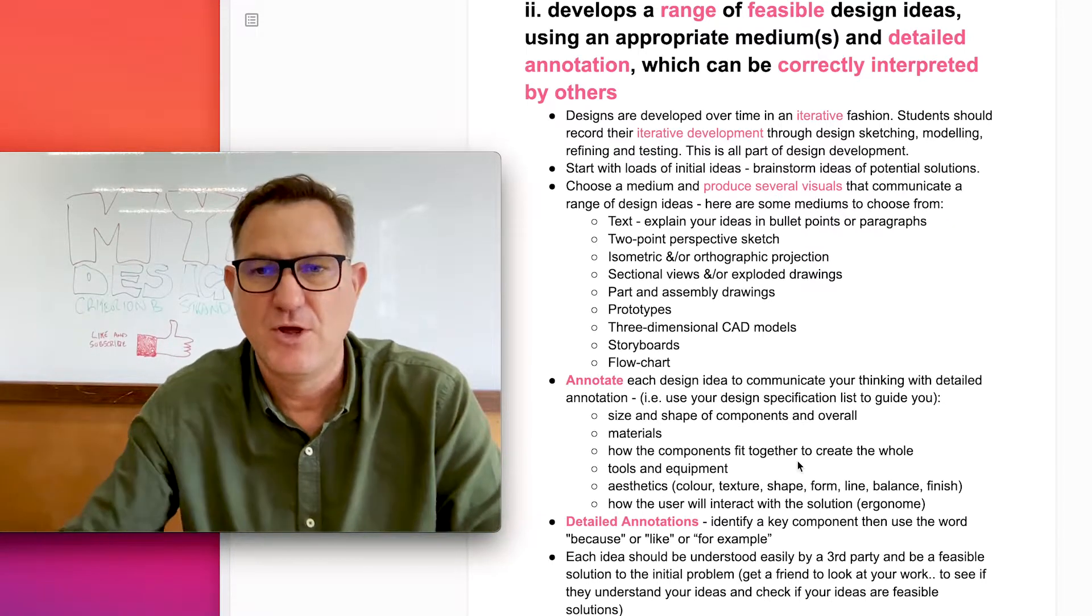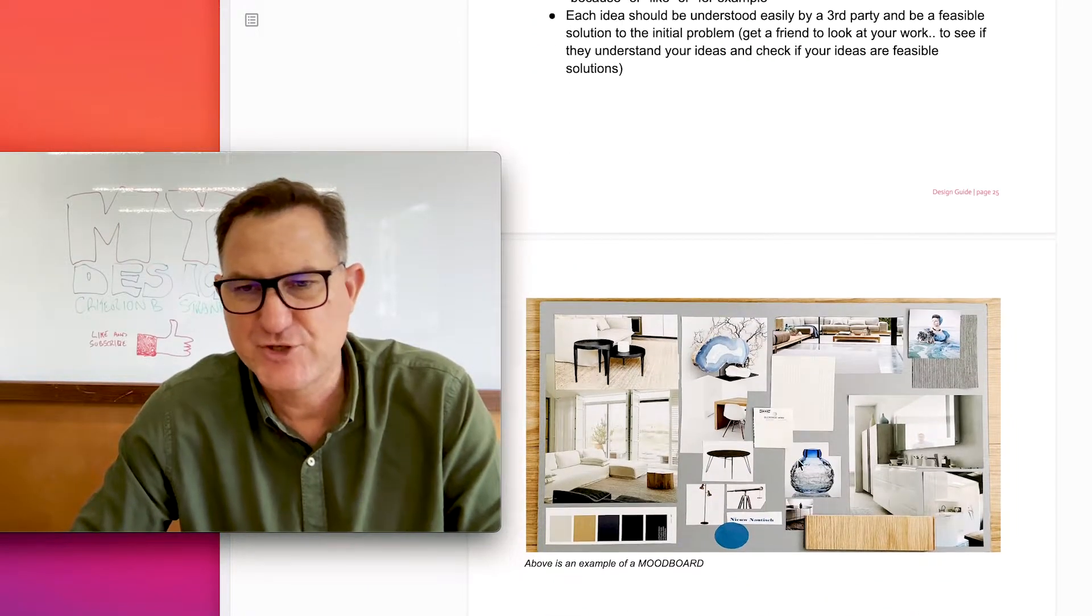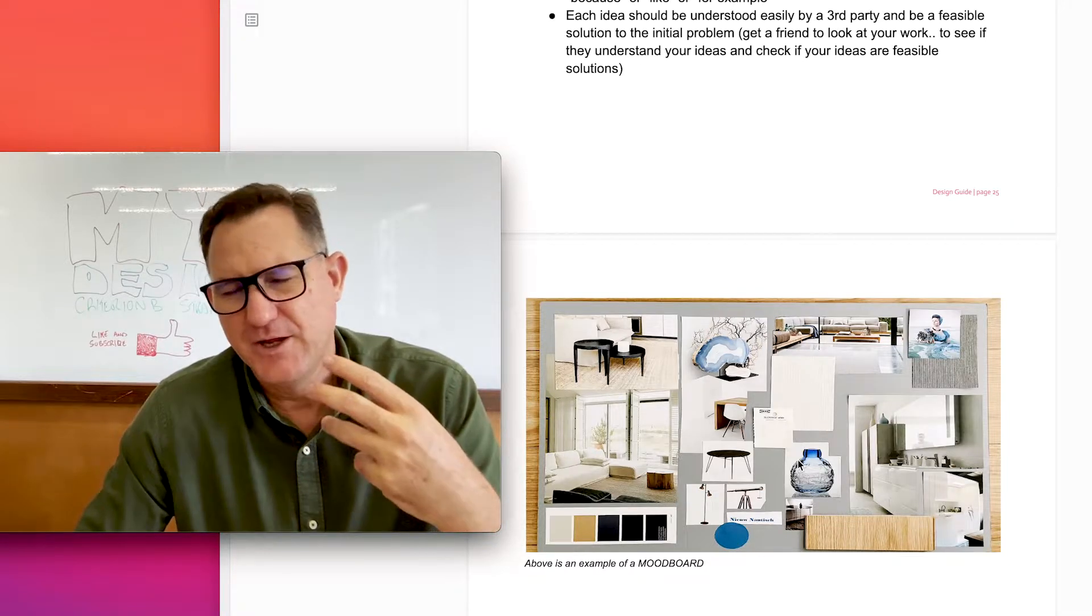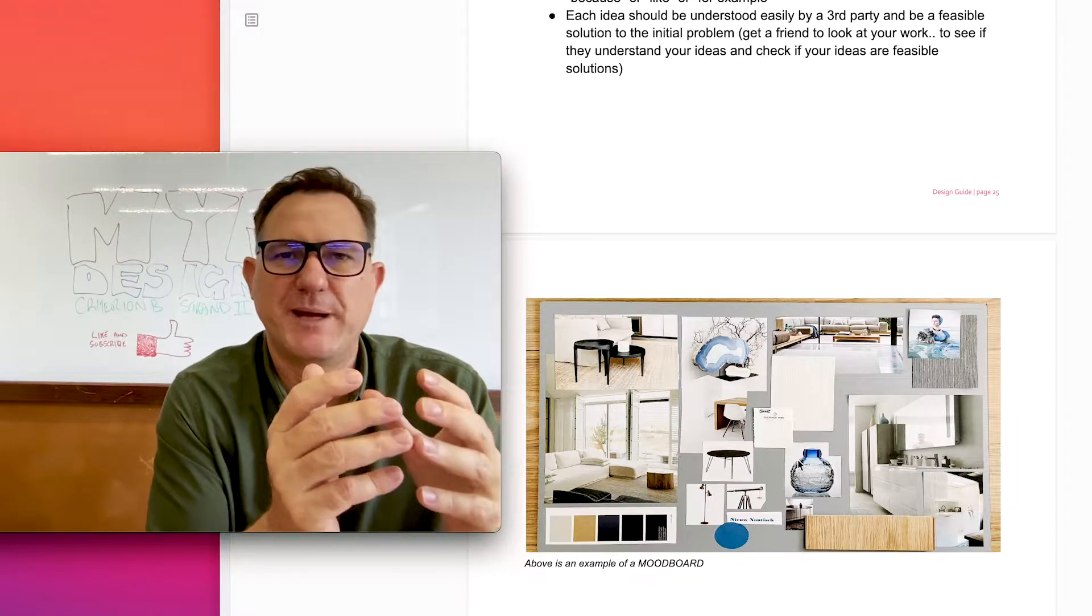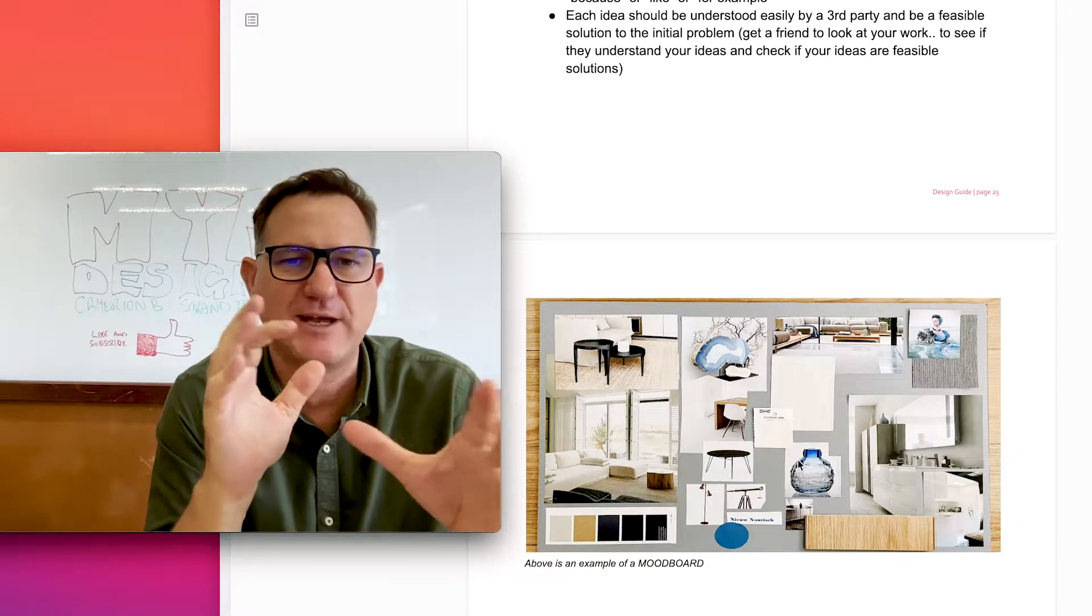Now I want to show you a couple of examples of what Criterion B Strand 2 could look like. First of all, we've talked about the concept of a mood board early. It's kind of in Strand 2, kind of a mood board, but it's more of a focus about what the product is.